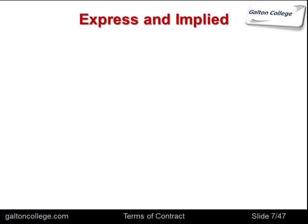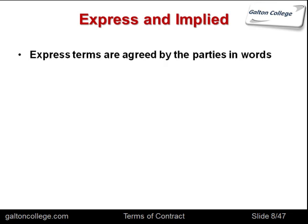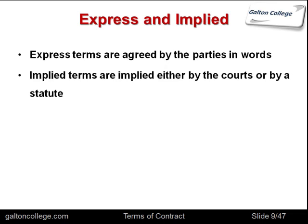Express terms are agreed by the parties in words. There's no ambiguity here — you go up front and say what should be in the contract. Implied terms are implied either by the courts or by statute, sometimes because of custom and habit or tradition. Even though there is a contract with expressed terms understood explicitly by both parties, there are also implied terms because the industry has always done it that way, so it's not written but it's implied and the courts would take that into account.